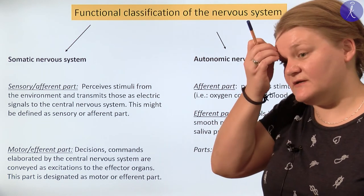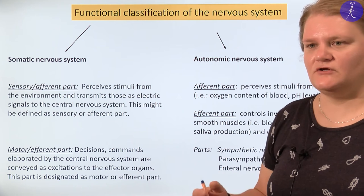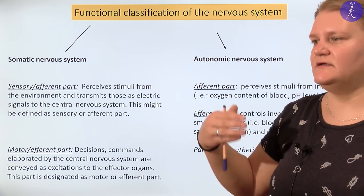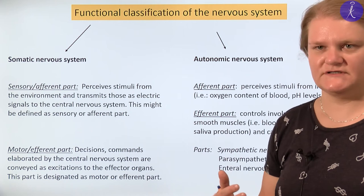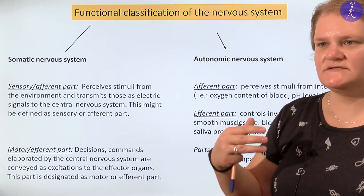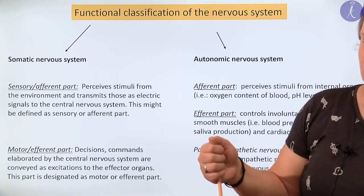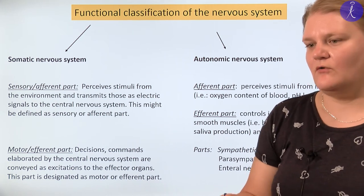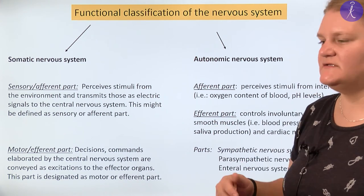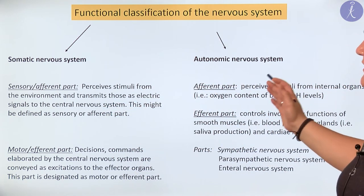For example, if you want to drink a cup of tea or coffee, the information about the temperature of the cup is translated into electrical signals, and then a decision is made based on the signals coming from the environment — what should I do? So I put down the cup of coffee or I don't. I can control my movement — this is why the somatic nervous system is the conscious part.